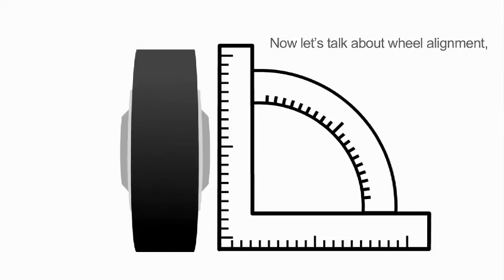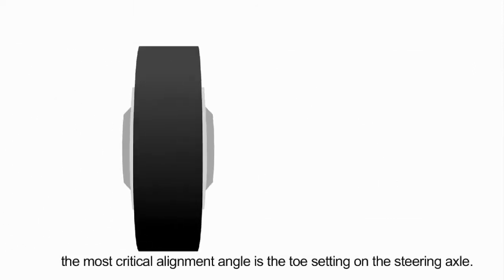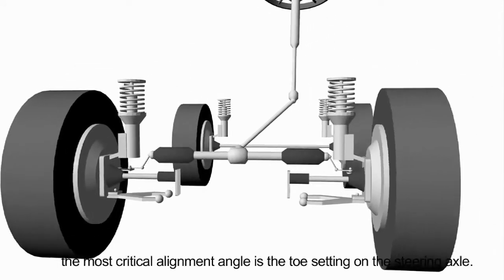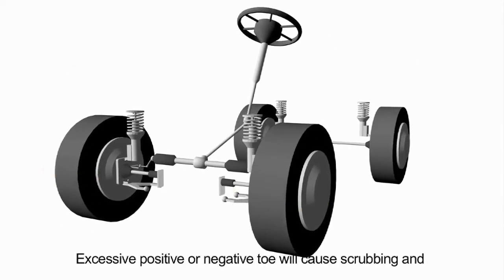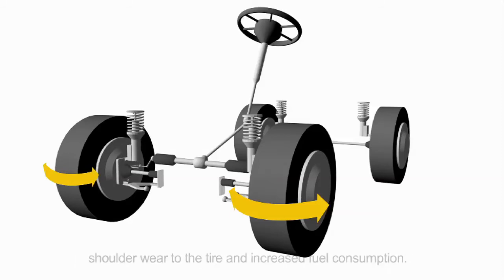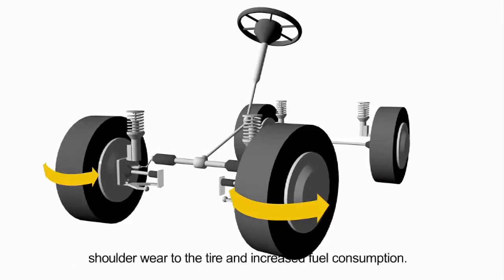Now, let's talk about wheel alignment. The most critical alignment angle is the toe setting on the steering axle. Excessive positive or negative toe will cause scrubbing and shoulder wear to the tire and increased fuel consumption.